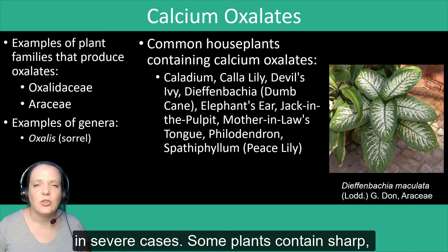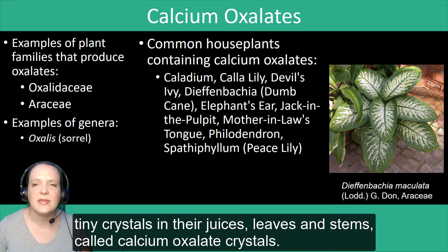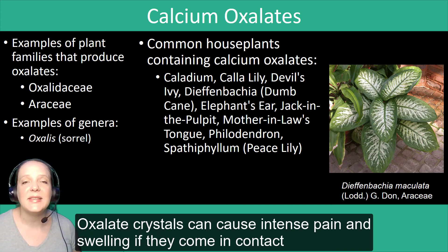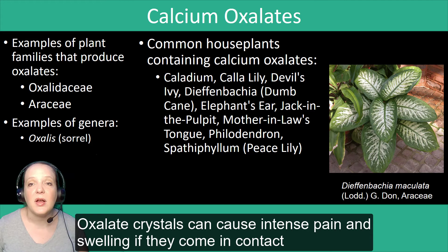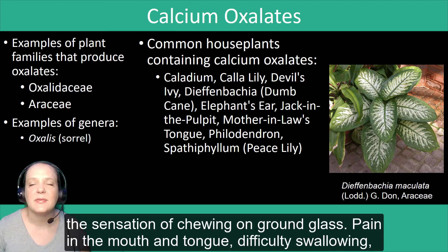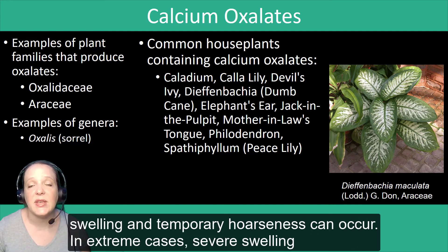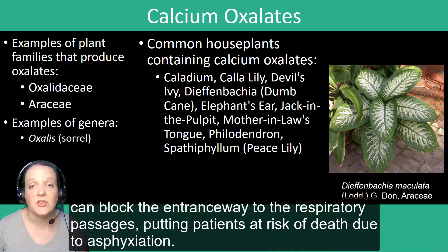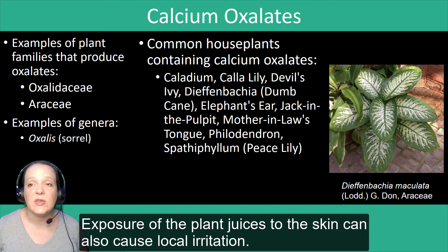Some plants contain sharp, tiny crystals in their juices, leaves, and stems, called calcium oxalate crystals. Oxalate crystals can cause intense pain and swelling if they come in contact with the skin or mouth. When ingested, the tiny crystals irritate the mucous membrane, creating the sensation of chewing on ground glass. Pain in the mouth and tongue, difficulty swallowing, swelling, and temporary hoarseness can occur. In extreme cases, severe swelling can block the entranceway to the respiratory passages, putting patients at risk of death due to asphyxiation. Exposure of the plant juices to the skin can also cause local irritation.